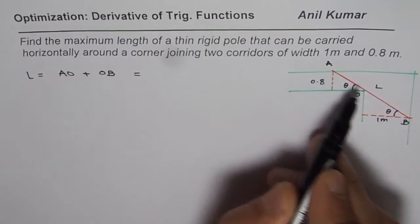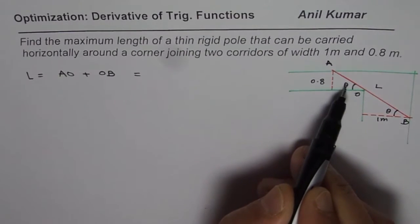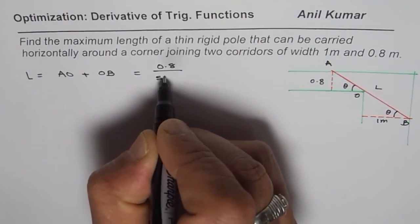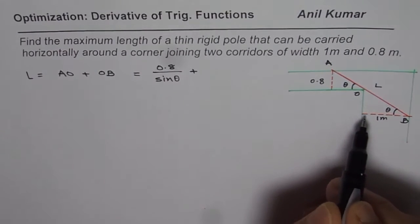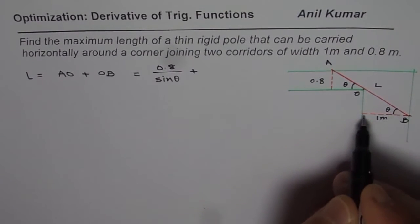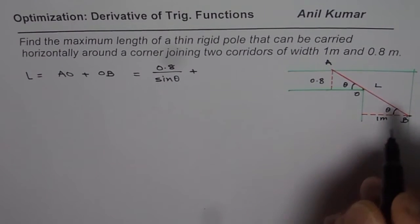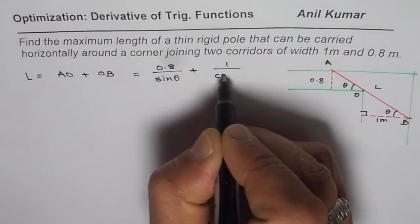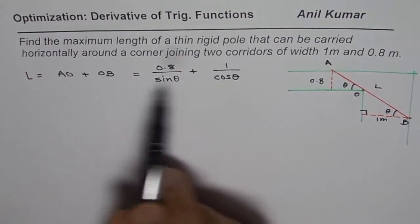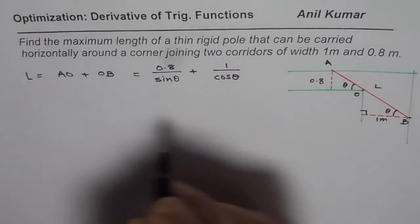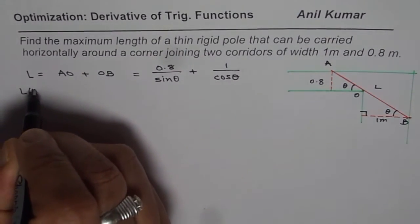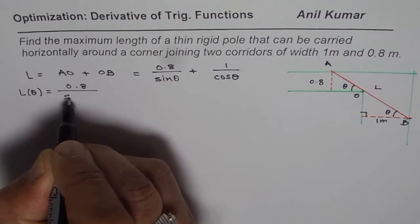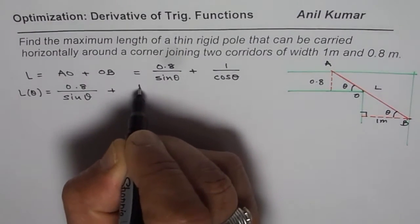From here, AO is — if this is angle theta, the opposite side is 0.8, so AO will be 0.8 over sine theta. The adjacent side is 1 meter, and therefore OB, which is the hypotenuse, will be 1 over cos theta. So in this fashion we get the length of the rod as a function of angle theta: L(θ) = 0.8/sin θ + 1/cos θ.